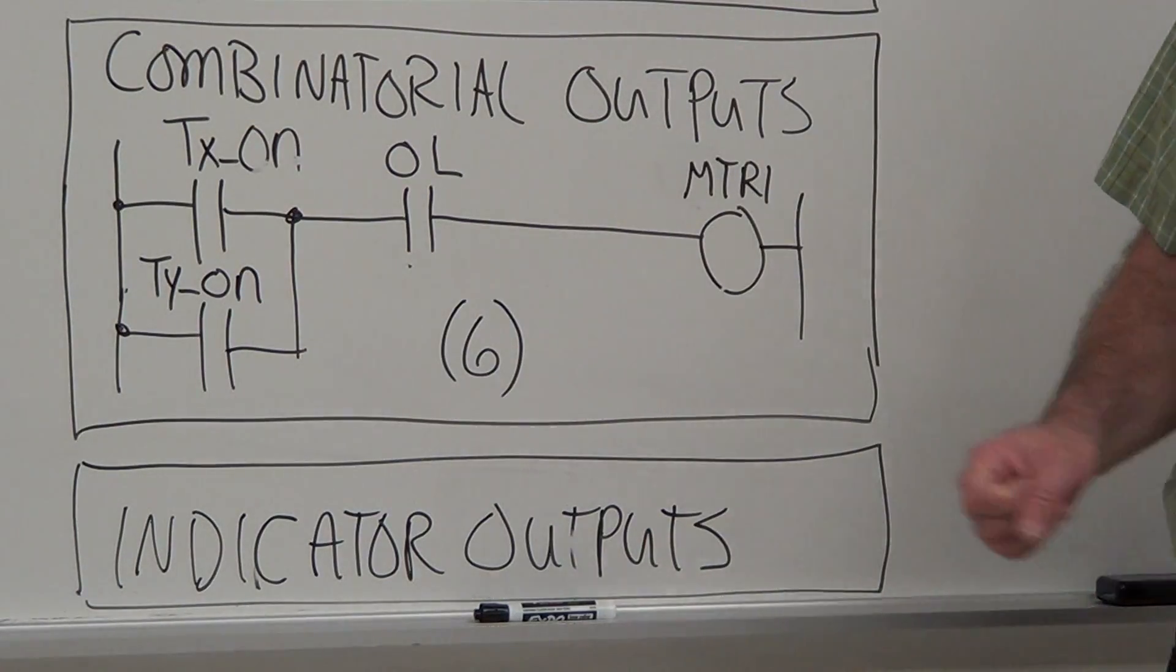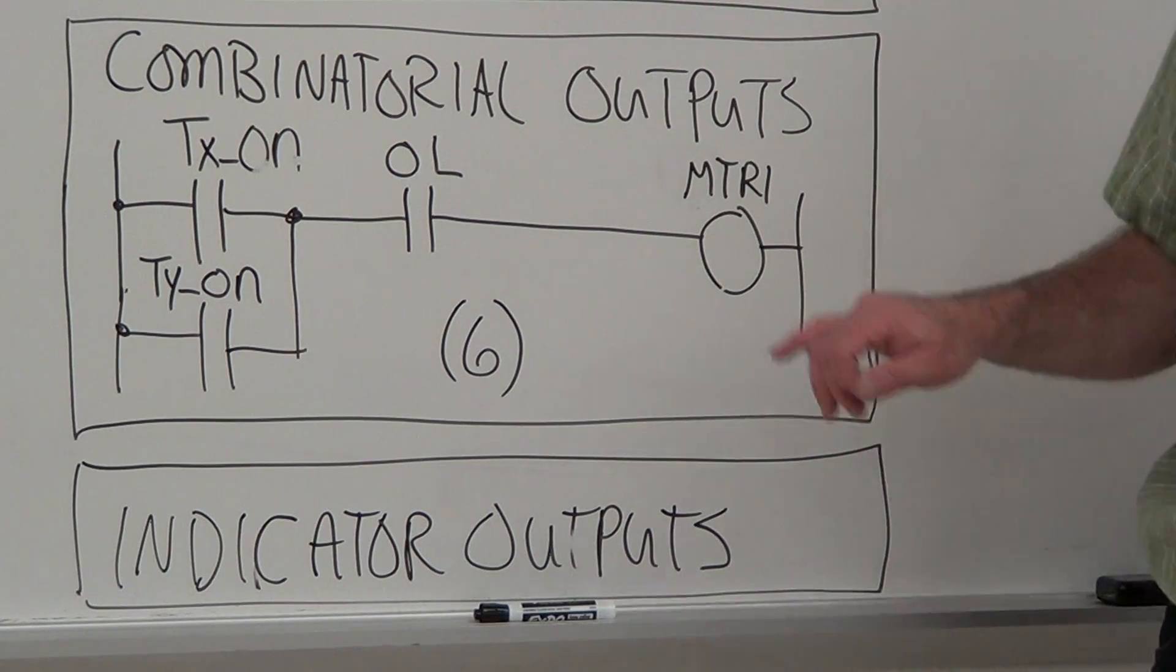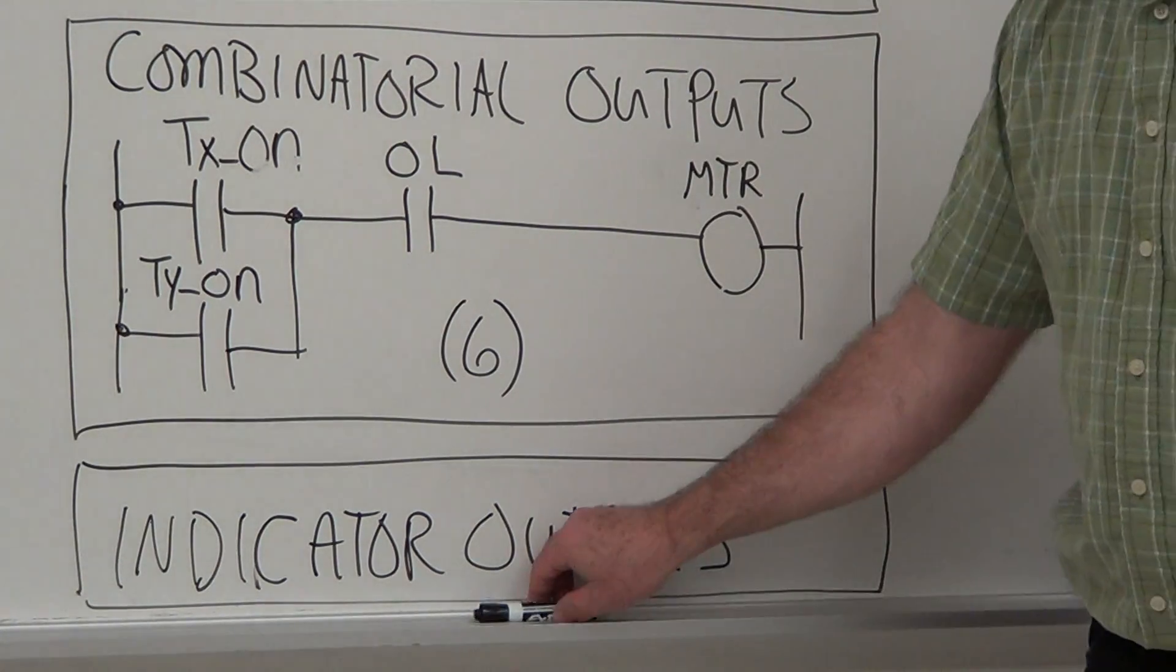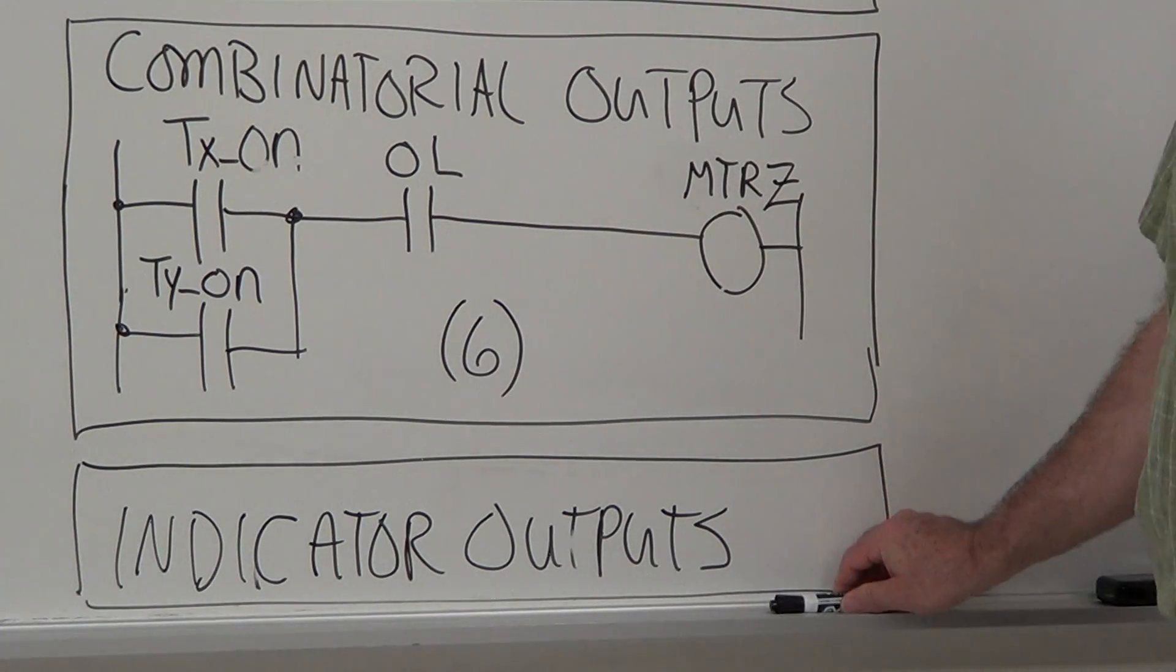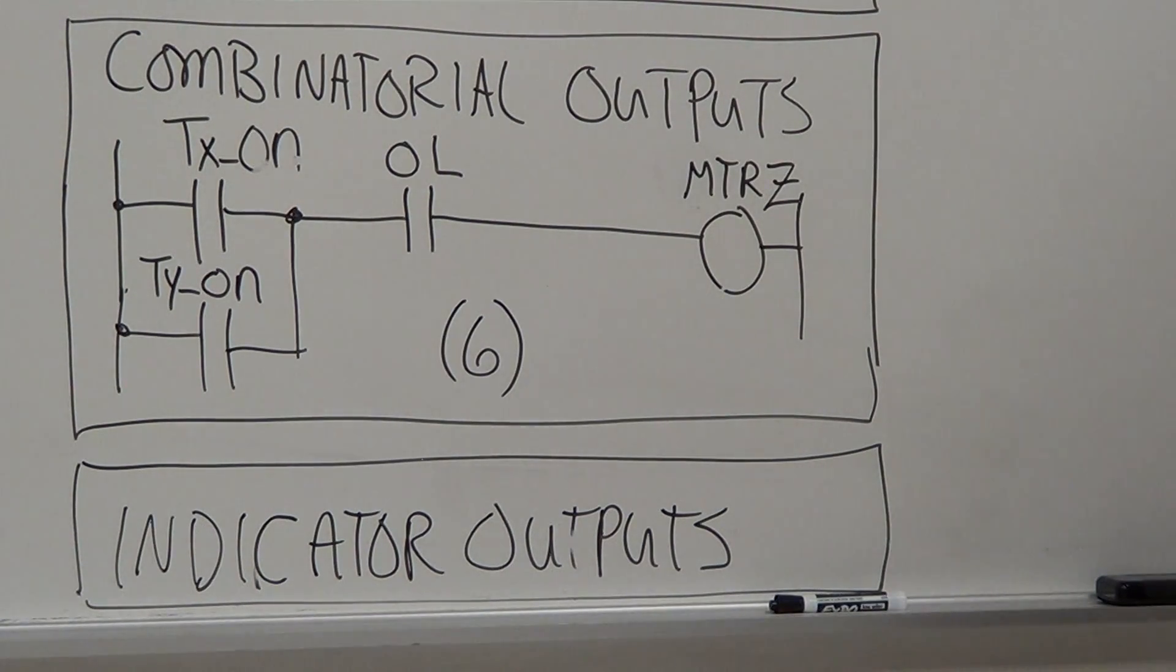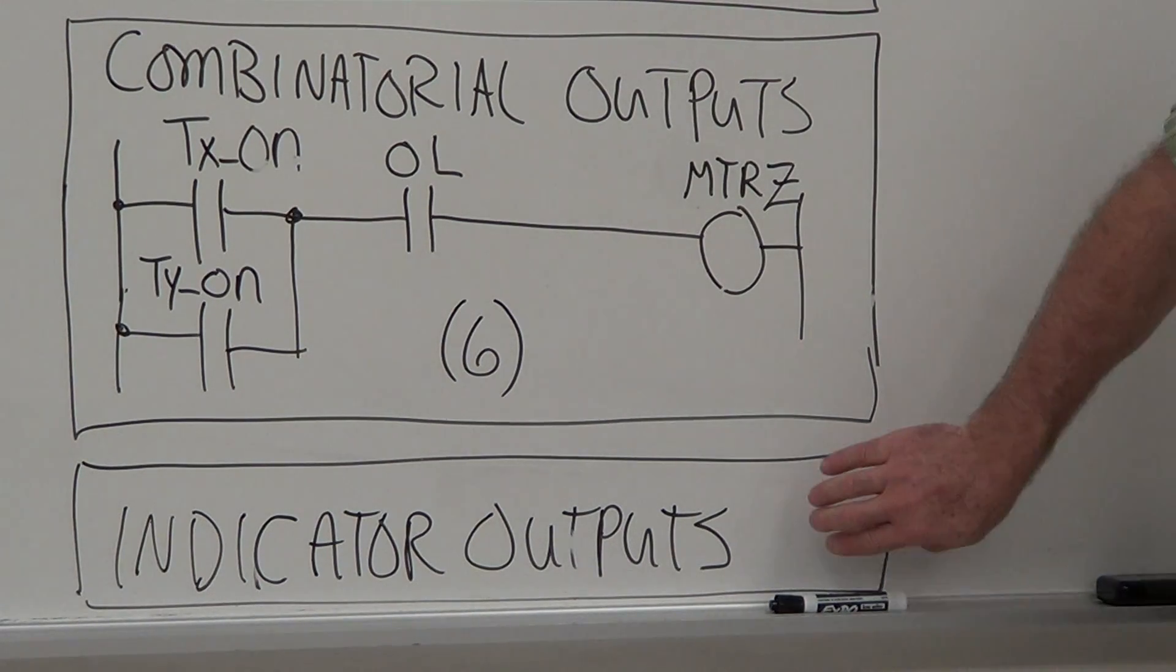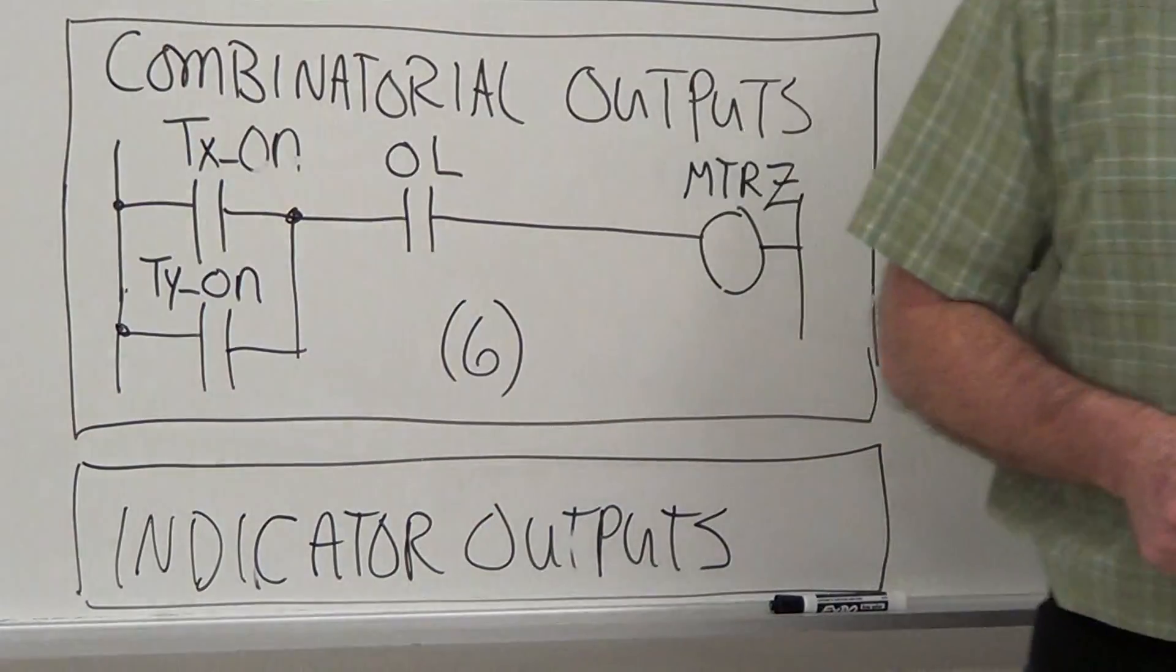The next one, motor two, is going to have an on-delay timer output, off-delay timer, overload, motor two. I guess I should put this as, instead of motor one, we'll make that motor Z - Z is in one, two, three, four, five, or six. Then you group all your outputs together there.